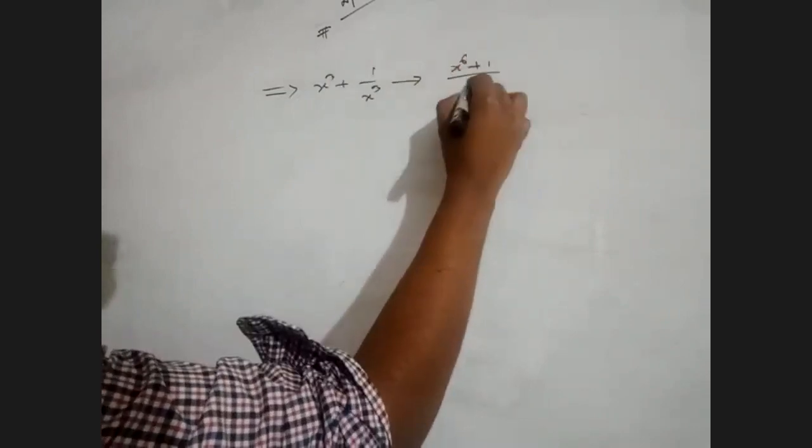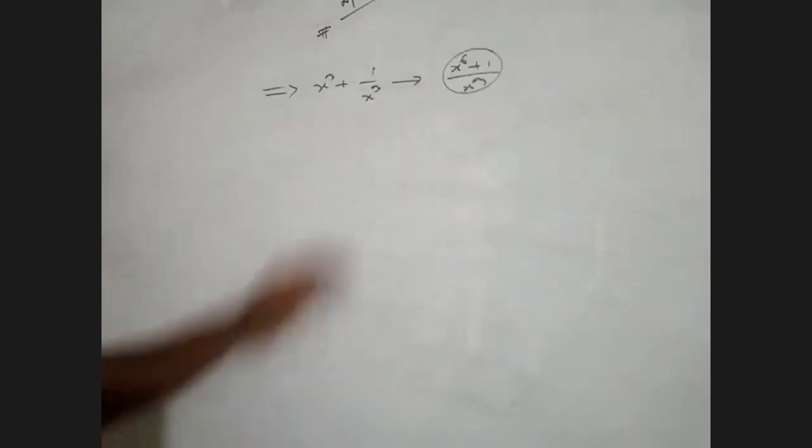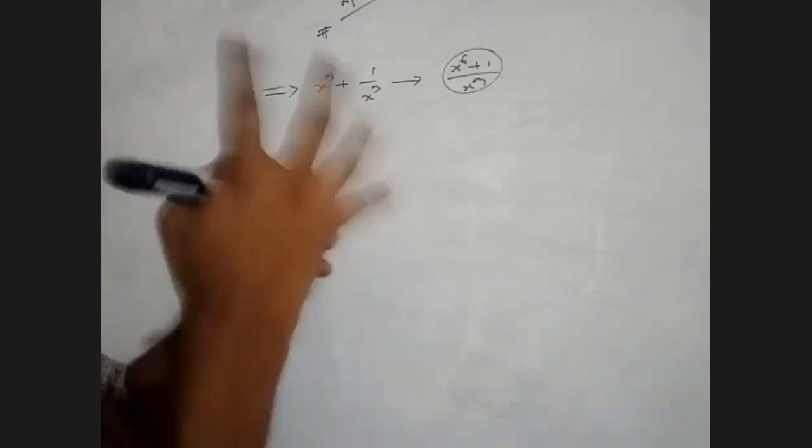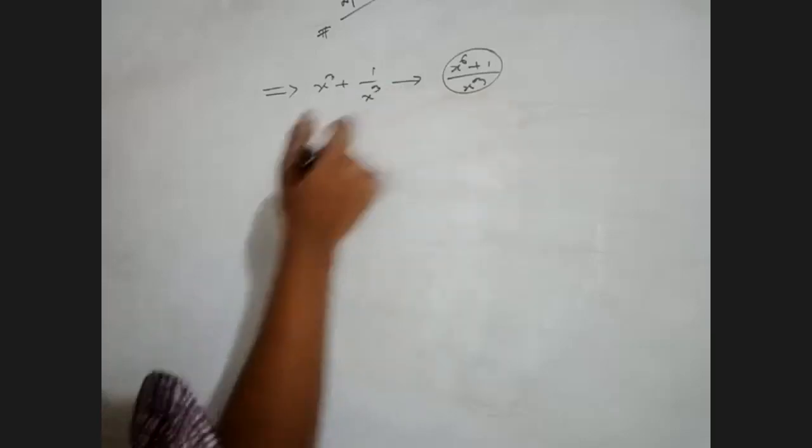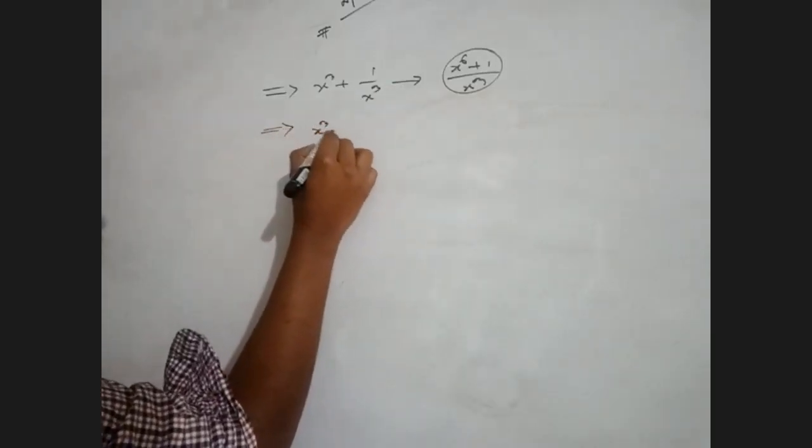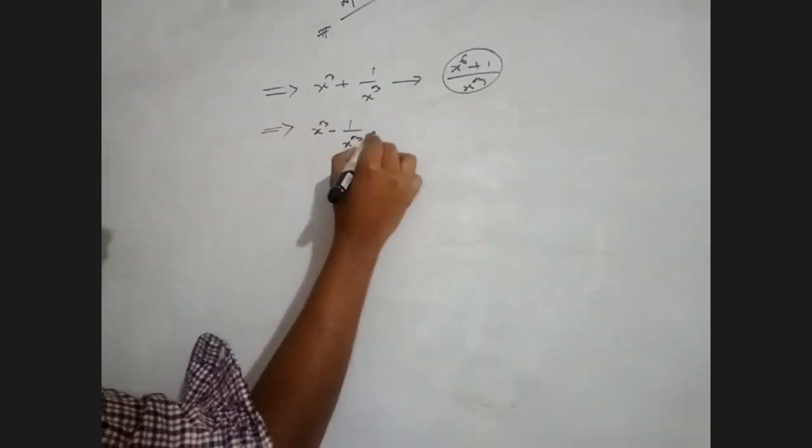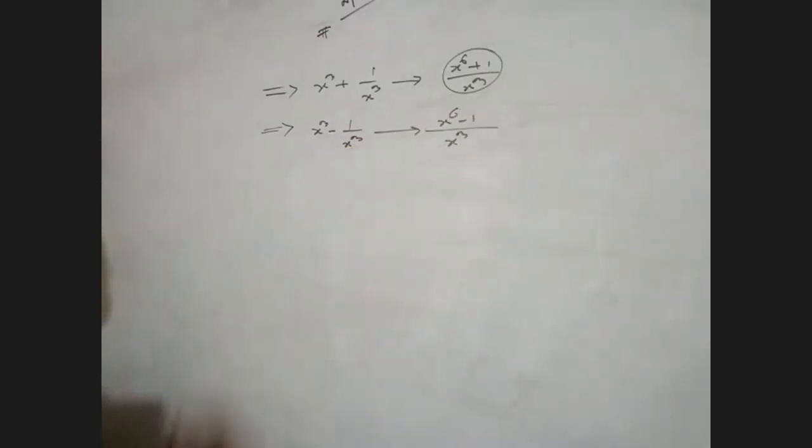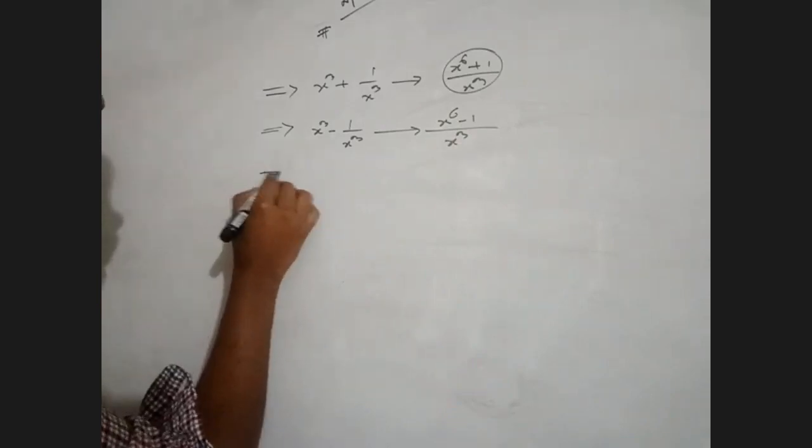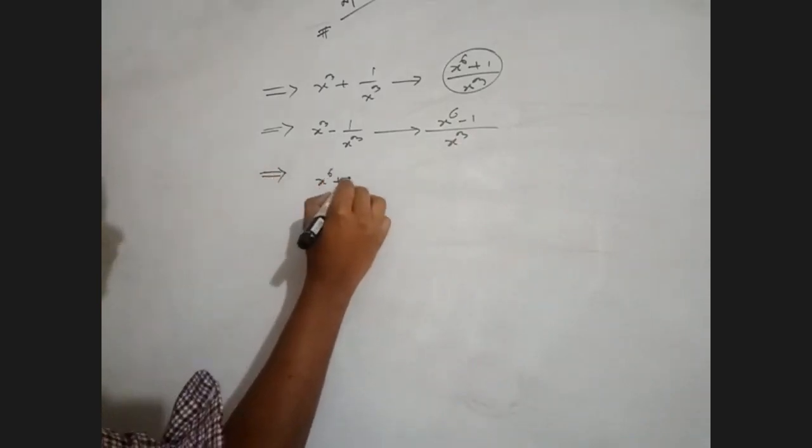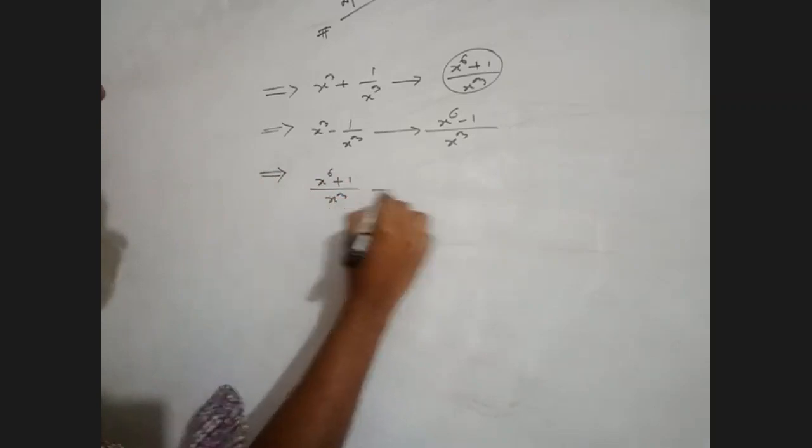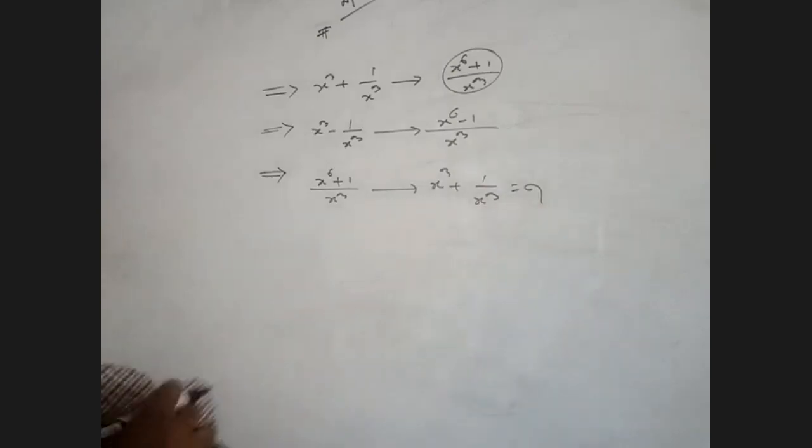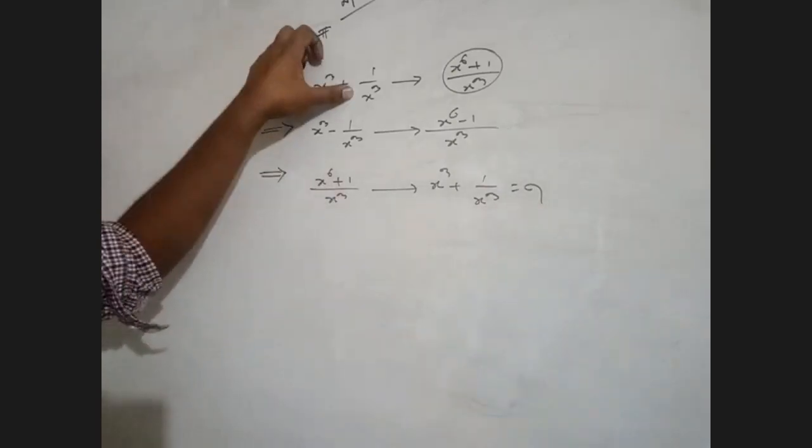x to the power 6 plus 1 divided by x cube. Okay, so we have Q2 plus and Q2 minus.